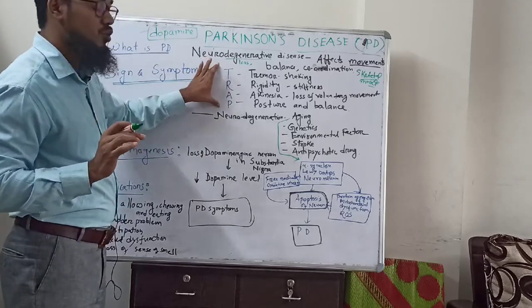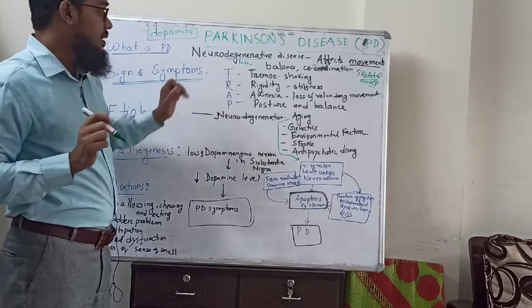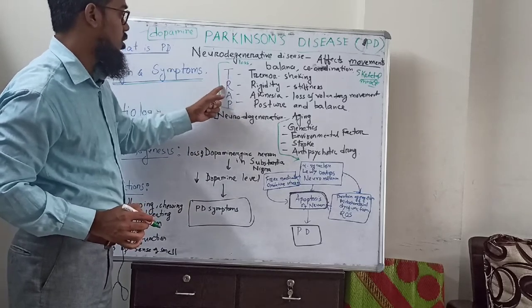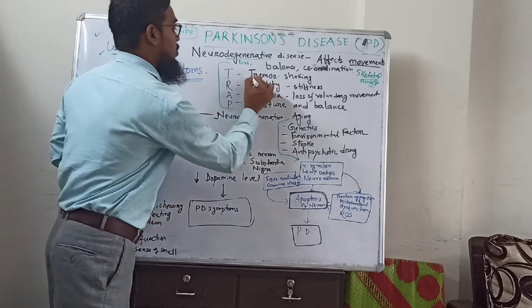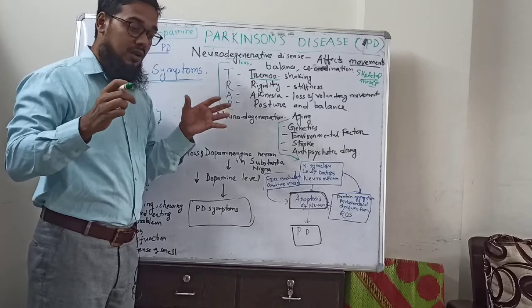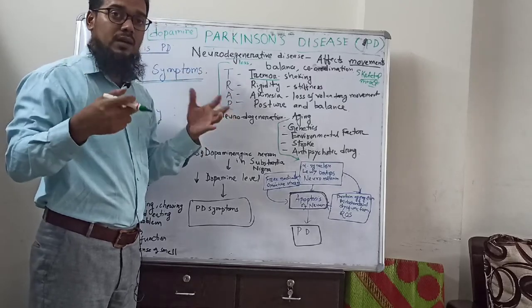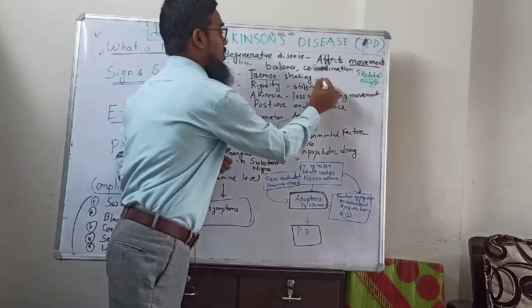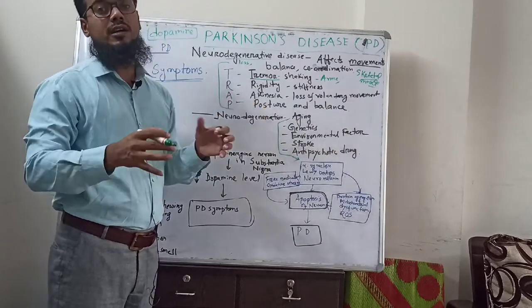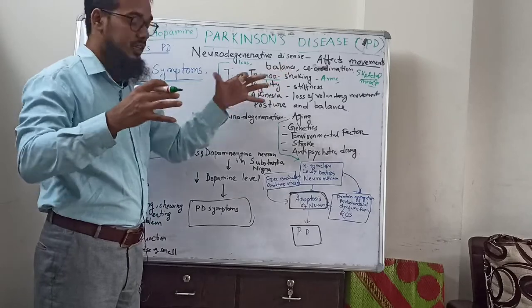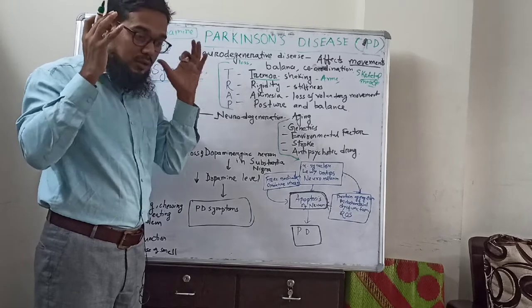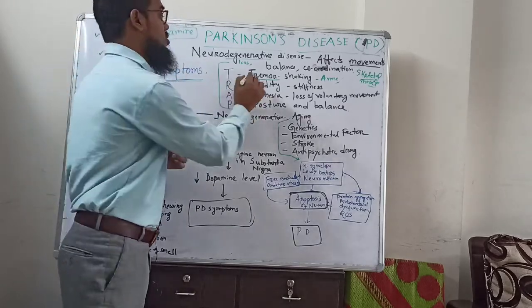The main signs and symptoms of Parkinson's disease are abbreviated as TRAP. T means tremor — tremor means shaking. The person while talking or walking experiences shaking of the arms, legs, jaws, neck — continuous shaking they cannot control. Voluntary muscles of hands, arms, legs, jaw, and neck all shake continuously. That is called tremor.